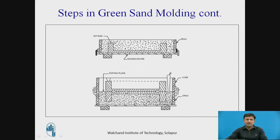After both halves are complete, we are left with the mould cavity shape. When the pattern is removed, the metal is poured into the cavity. The molten metal flows through the gating system into the cavity, and this produces the part exactly as required. The pattern is the exact replica of the desired part.